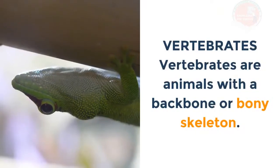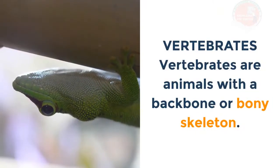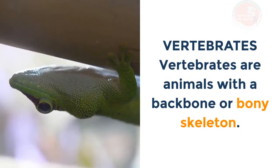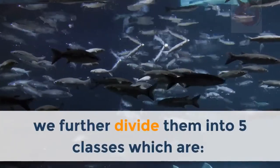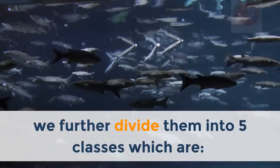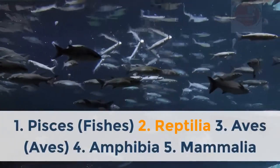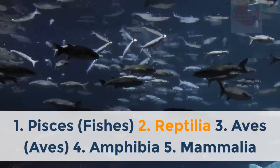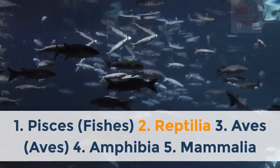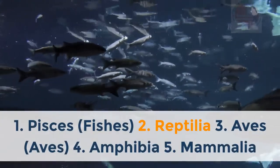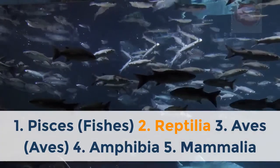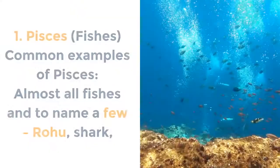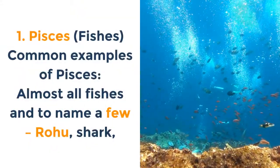Vertebrates are animals with a backbone or bony skeleton. Based on their varying characteristics, they are divided into five classes: 1. Pisces (fishes), 2. Reptilia, 3. Aves (birds), 4. Amphibia, 5. Mammalia.